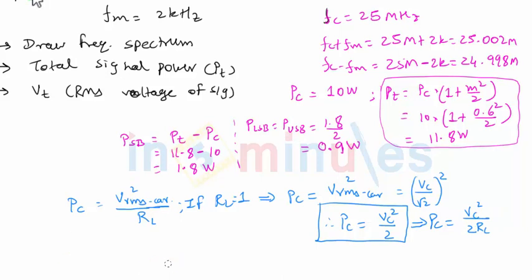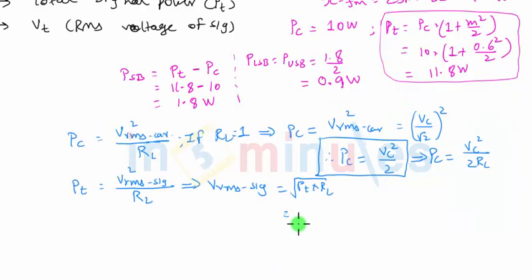Similarly, I can write the total power expression also. The total power PT will be VRMS signal, this time we are saying signal squared, divided by RL. The question says find VRMS of the signal, so VRMS signal will be nothing but square root of PT into RL.